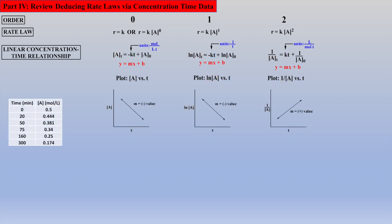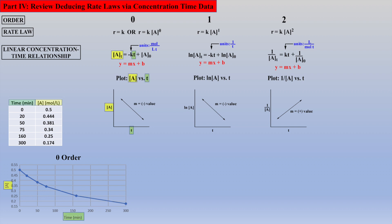So, given some concentration time data, let's try to linearize this data. First, we will try by plotting the concentration of A versus time to see if the reaction follows zero-order kinetics. Because the plot is not linear, we can determine that the reaction does not follow zero-order kinetics.